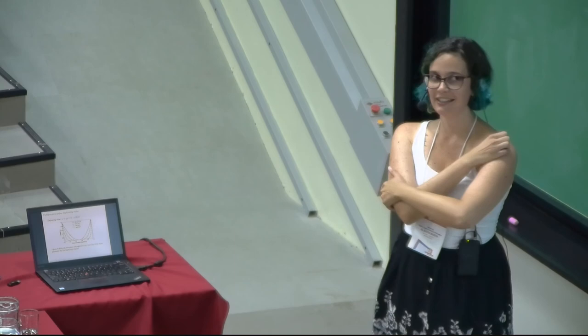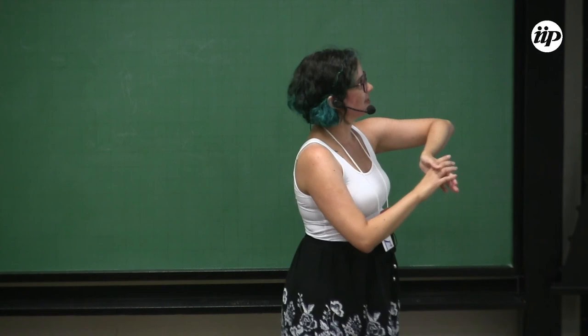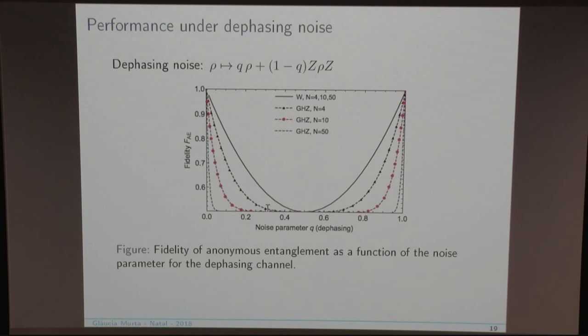We also looked at dephasing noise. An interesting feature is that for the W state protocol, the fidelity of the anonymous entangled state does not depend on the number of parties. This was very surprising at first, but we believe it is because we post-select on the outcome of a Z-basis measurement — we proceed with the protocol only if we get all zeros, otherwise we abort. Of course, the probability of succeeding decreases linearly with the number of parties, but the fidelity is independent of it.